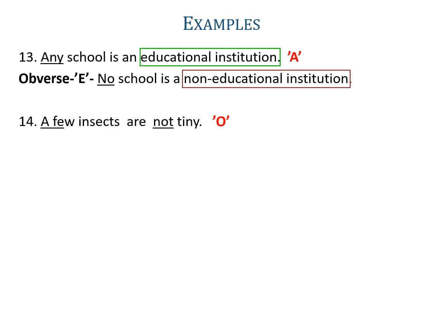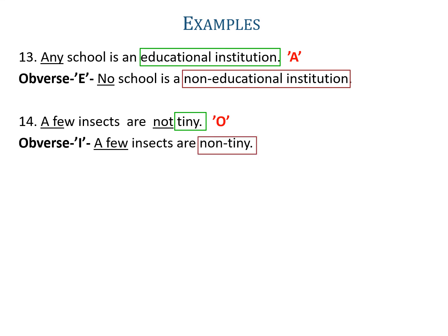Example fourteen: 'A few insects are not tiny.' A few and not is used, so it is an O-proposition. Its obverse will be I, where only a few will be used. The predicate is tiny, its complementary will be non-tiny. So the obverse is 'a few insects are non-tiny'.